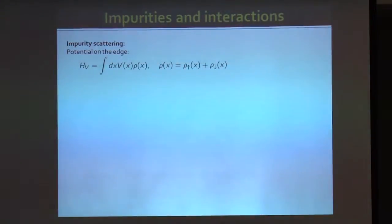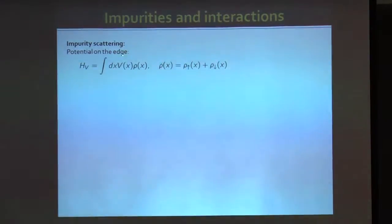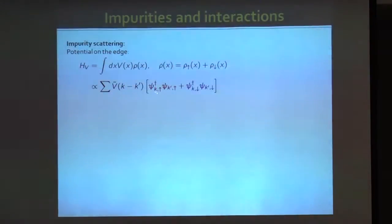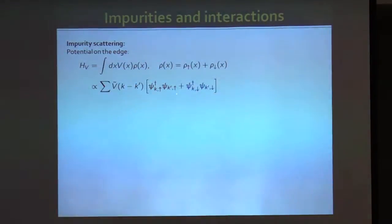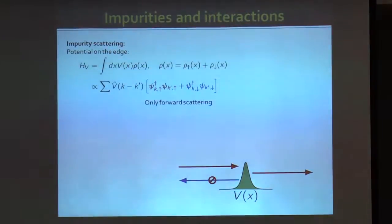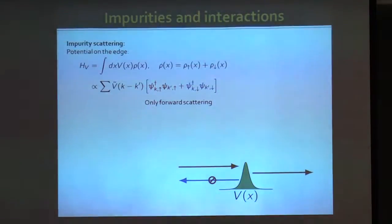This has important consequences for transport. If we consider impurity scattering, it corresponds to a term coupling to the total density — spin-up plus spin-down density. Expressed in terms of Fermi point operators, this creates only forward scattering within the right-moving and left-moving branches, but no backscattering. Forward scattering does not change the conductance away from e-squared over h, because a time reversal symmetric Hamiltonian cannot produce a backscattering term.